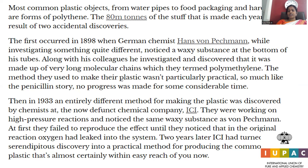In 1933, an entirely different method for making plastic was discovered. Initially found accidentally in 1898, researchers didn't know how to synthesize the same material economically. After a long gap, a new pathway was introduced to make plastic in a scalable manner — by the chemist team at the then-chemical company ICI, who were working on high-pressure reactions and noticed the same waxy material von Pechmann had found.